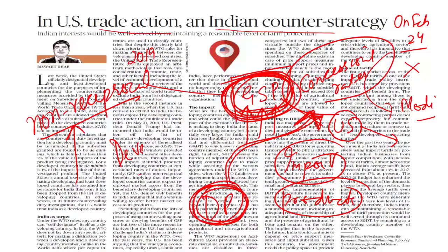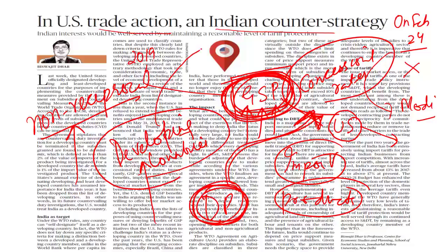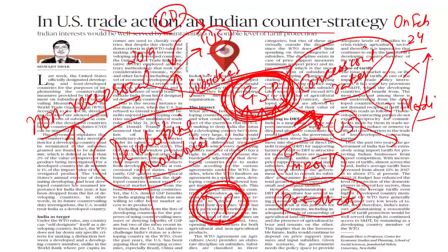Last week, India was also taken off the list of developing countries by the US. This means India will now be treated as a least-developed country, and if Indian exports to the US are subsidized by the government, countervailing duties will be imposed. This makes Indian exports to the US more expensive. These are serious challenges in the India-US relationship ahead of Trump's visit.